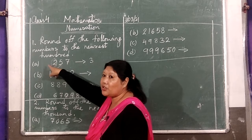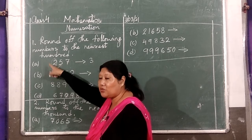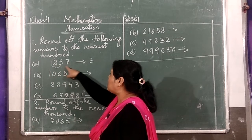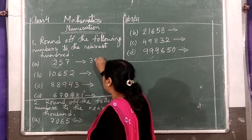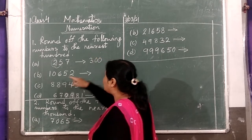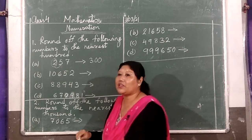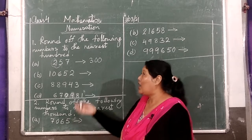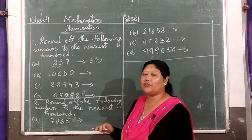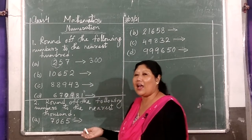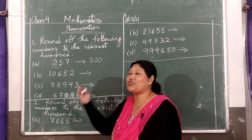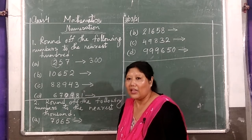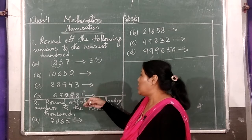If it was 4, it won't change — it will remain the same. So these digits will become 0. That means 257, if you bought an article at 257, you will say that it cost almost 300.